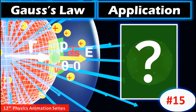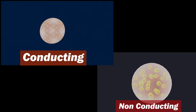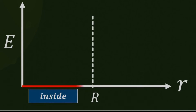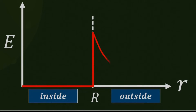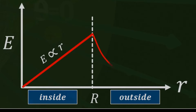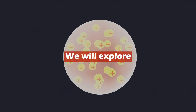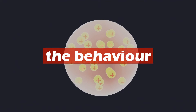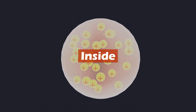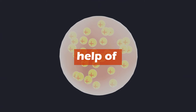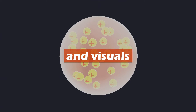Hello students. In this video you observed how the behavior of charges differ between conducting and non-conducting spheres. Also you learned how there are changes in the electric field intensity inside and outside conducting and non-conducting charged spheres. Today, let's dive back into the world of charged spheres. This time we will explore the behavior of electric potential inside and outside charged spheres with the help of animation and visuals.